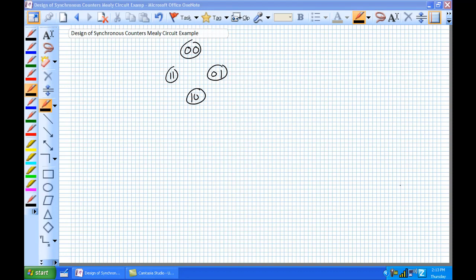Our last example was a Moore circuit where the next state is just dependent upon the present state. This example is going to be the present state and an external input determine the next state.